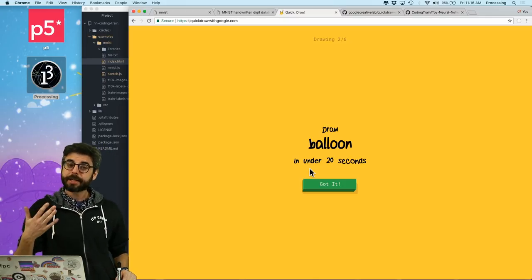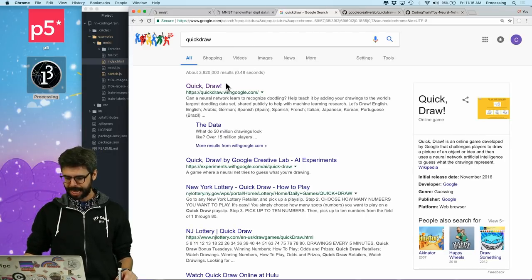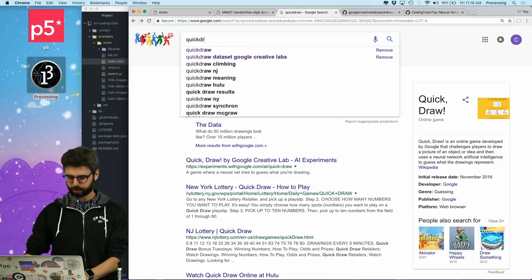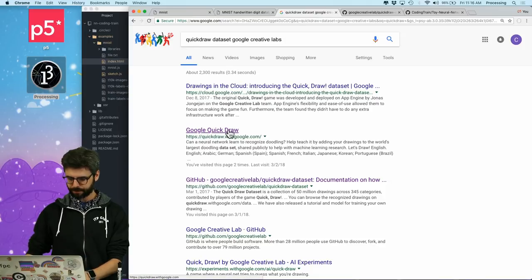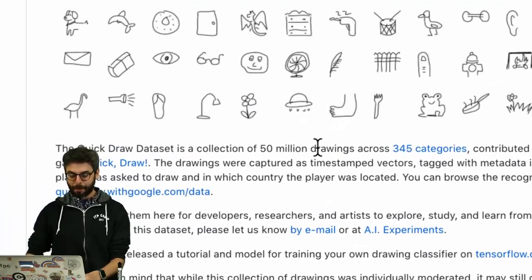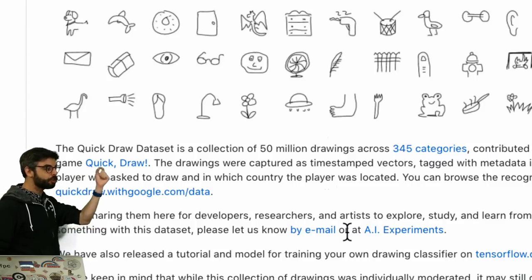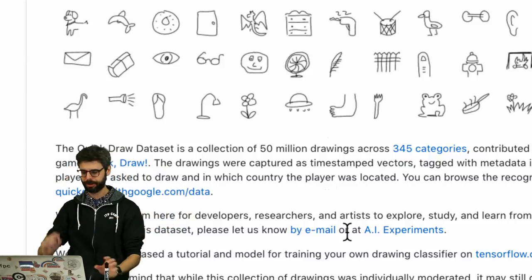As you play it, a machine learning system tries to guess what you're drawing. And it just so happens that people playing this game, Google collected 50 million drawings across 345 different categories. And all of that data is available to you.